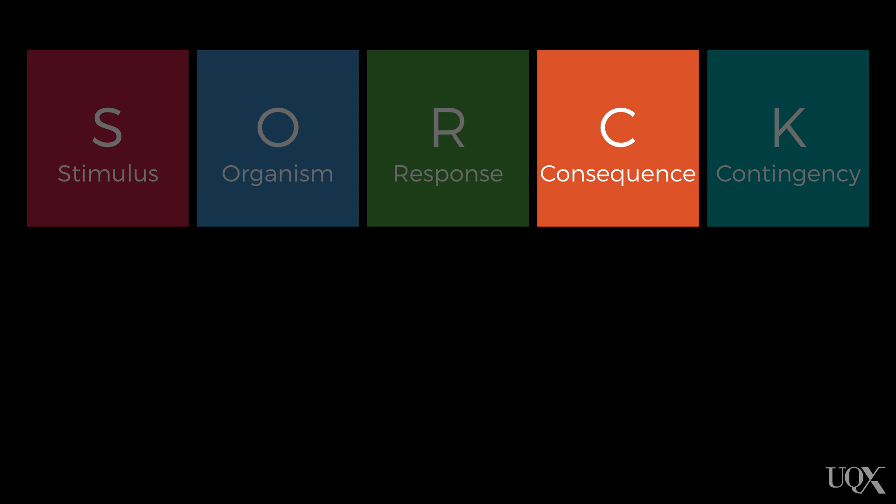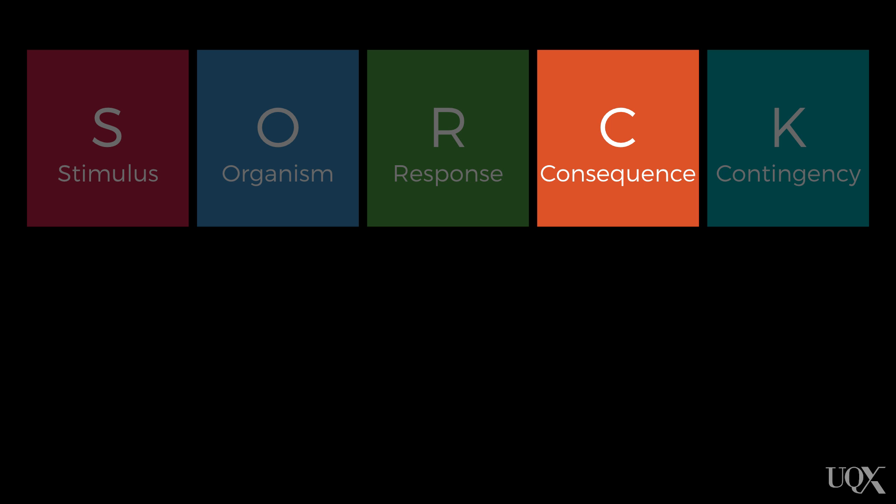The next place we go is the consequence column, and what belongs here is what happens after the problem behavior or response. It is important to think about this question from the perspective of each person involved in the interaction, in this case Jamie and his mum Christine.